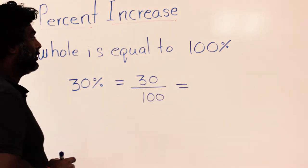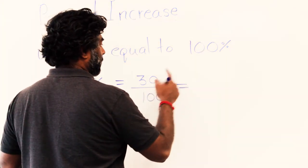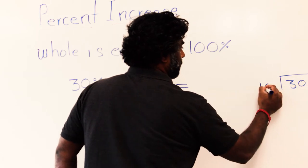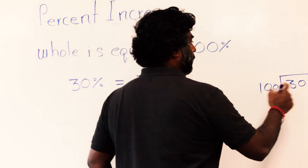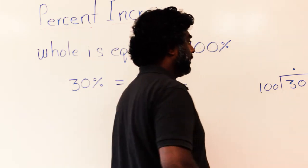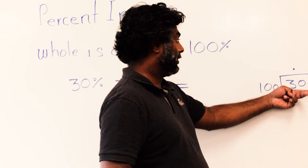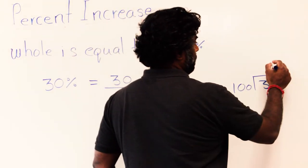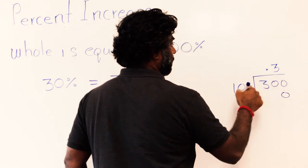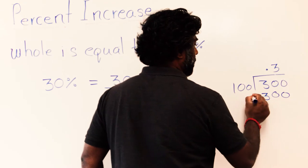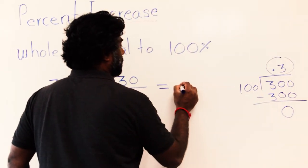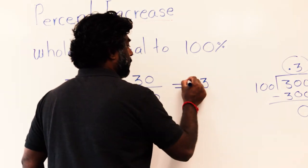How do we change into decimal? You can divide it or put it in the calculator, or do it by hand. 30 divided by 100 — 100 cannot go into 30, so just put a decimal and add a zero. This makes 300 — how many hundreds in 300? Which is three. Three times 100: three times zero is zero, three times zero is zero, three times one is three. Subtract it, and in decimal it's 0.3.